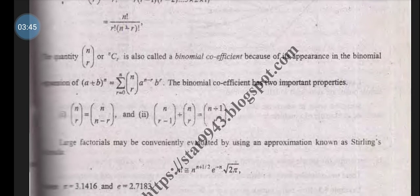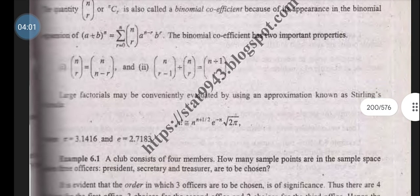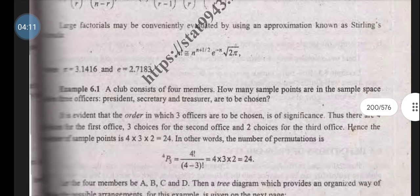nCr is also called the binomial coefficient because it appears in the binomial expansion of (a+b)^n, which equals the summation from r=0 to n of nCr times a^(n-r) times b^r. Also, nCr plus n(C(r-1)) equals (n+1)Cr.